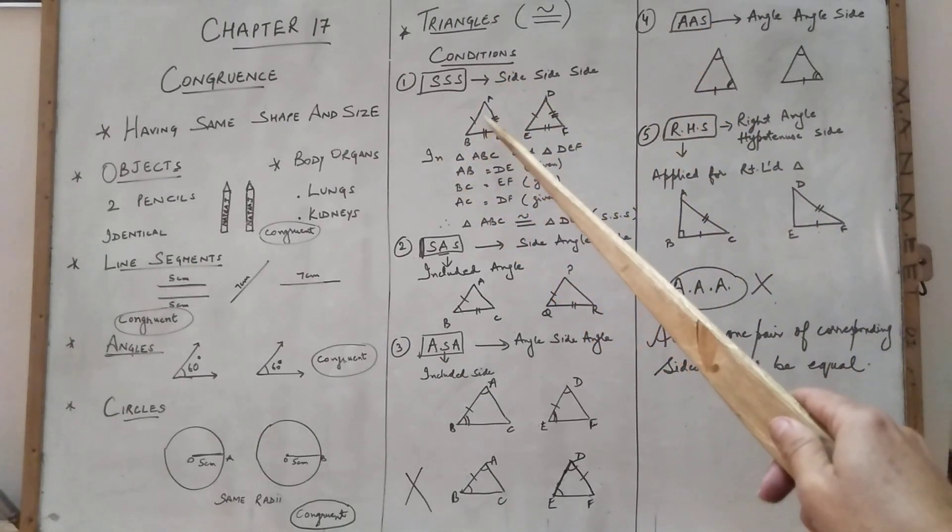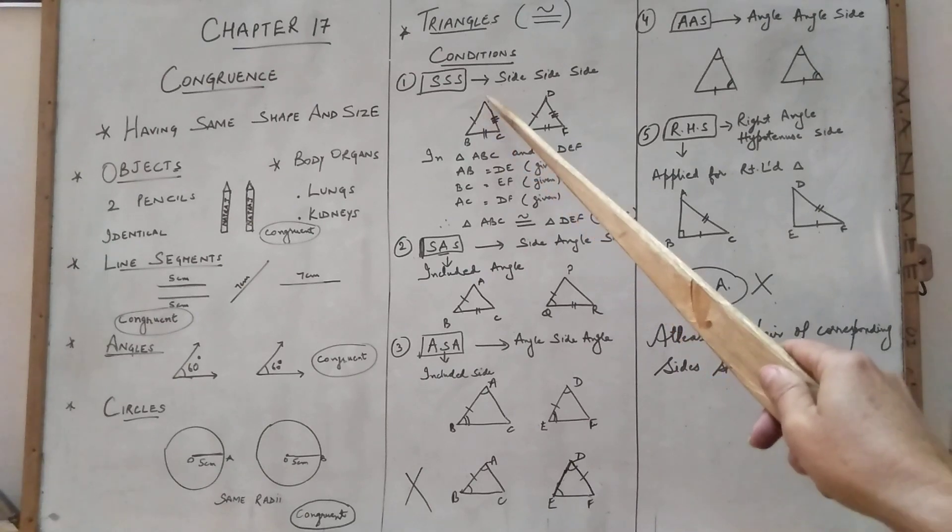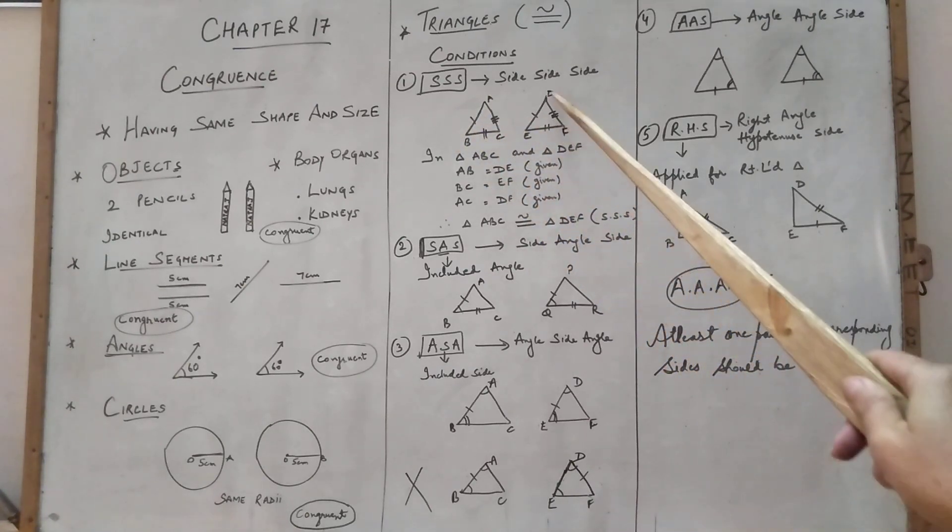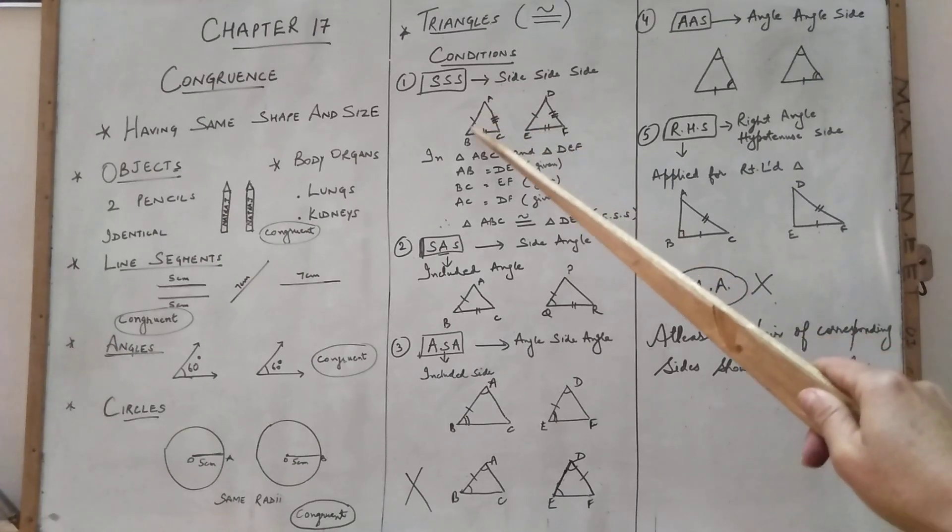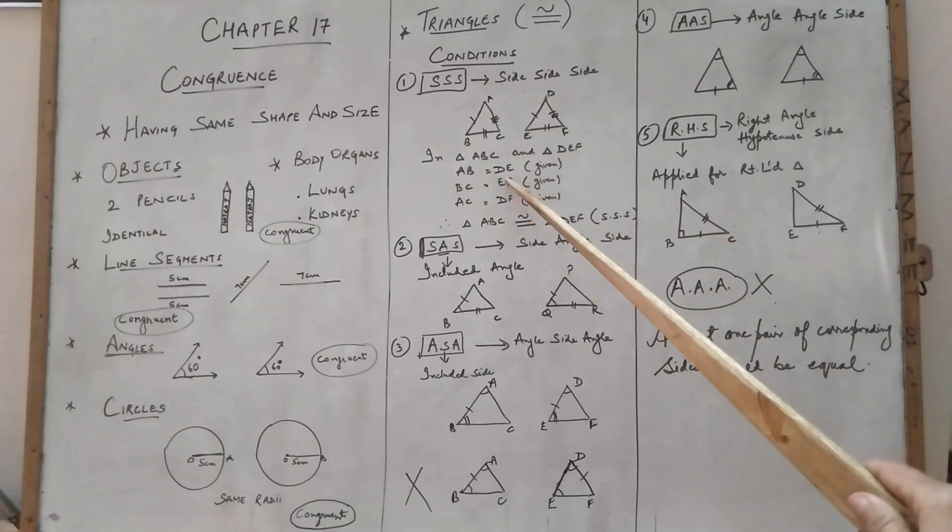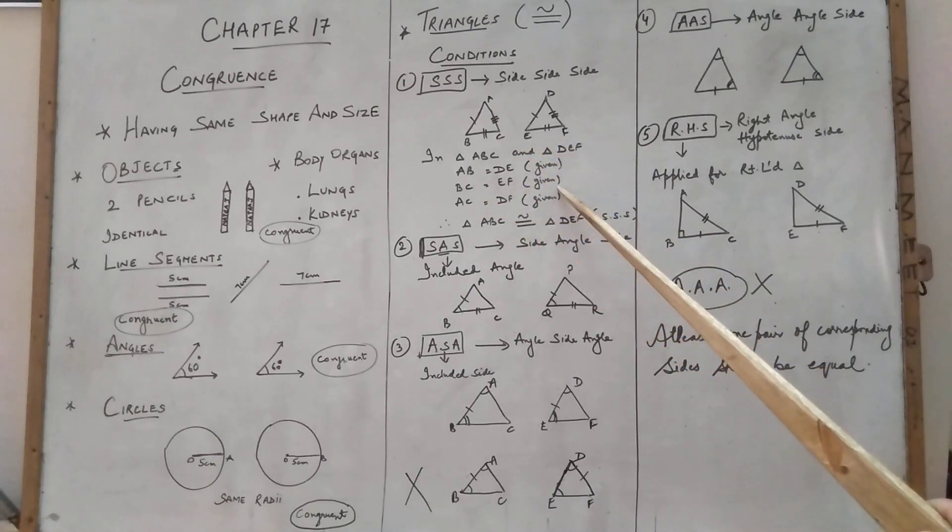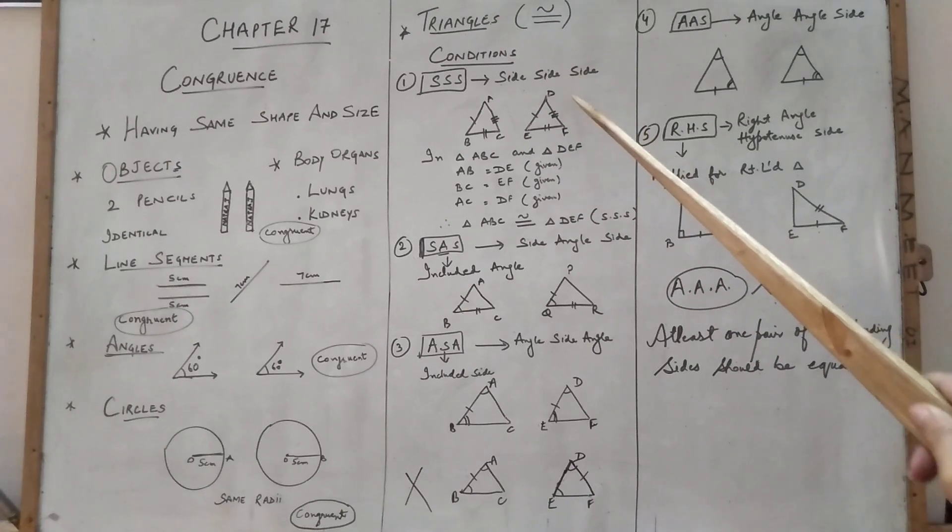So I have taken here triangle ABC. The name of the triangle is ABC and triangle DEF. So see, AB is equal to DE, given. BC is equal to EF, again given. We have to write the reason also. AC is equal to DF, again given.